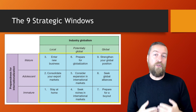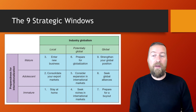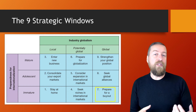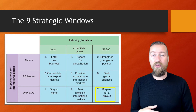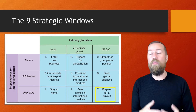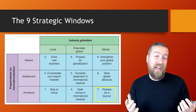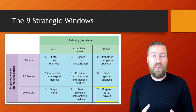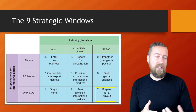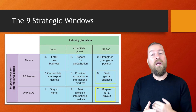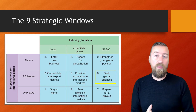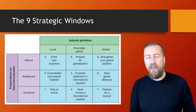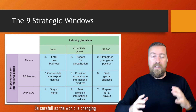The Nine Strategic Windows represent the combination of those two dimensions. An immature company in a global industry should look for a buyout or try to sell itself — for example, a small supplier to the automotive industry can't easily compete globally on its own. As the company gains skills, it should seek a global alliance to avoid being taken over. And once mature in a global industry, it should structure its global position. Be aware that this model was built originally when globalization was on the rise.